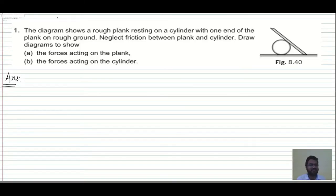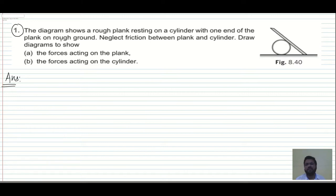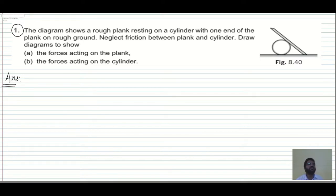Hello everyone, welcome to my channel PhysicsTix. Let's start with DPP3 and in this I will be taking FBD, that is free body diagram. Most of the questions will be the same. The first question: the diagram shows a rough plank resting on a cylinder with one end of the plank on rough ground. Neglect the friction between plank and cylinder. Draw the diagrams to show the forces acting on the plank and the forces acting on the cylinder.